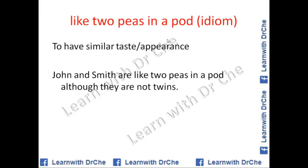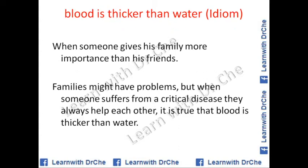'Like two peas in a pod' is an idiom meaning to have similar tastes and appearance. 'John and Smith are like two peas in a pod, although they are not twins.' Just as two peas sit together in one pod, it means they are in the same place and share similar tastes. You can use this especially in speaking — for example, when describing your best friend: 'We have the same tastes; we are like two peas in a pod.'